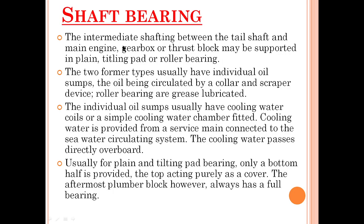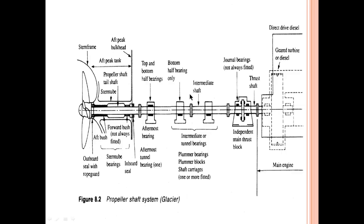The intermediate shaft between the tail shaft and the main engine, gearbox, or thrust block may be supported in plain, tilting pad, or roller bearings. So the intermediate shaft can be supported by different types of bearings — it can be plain, it can be roller, it can be tilting pad.